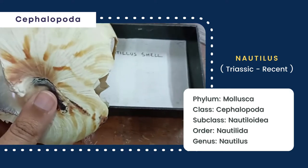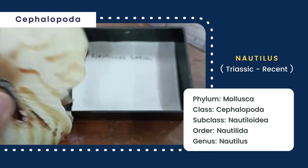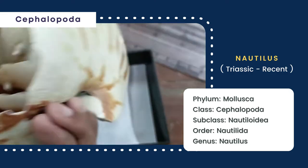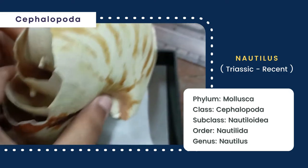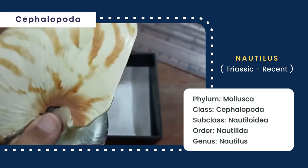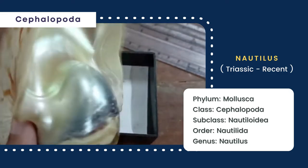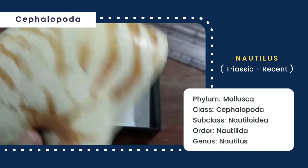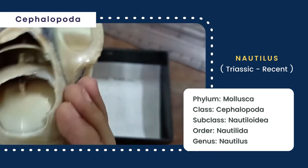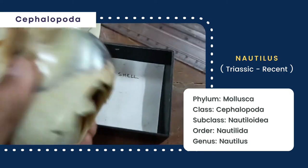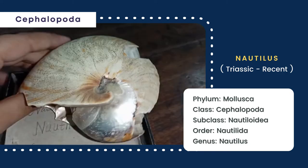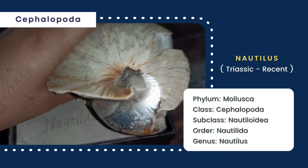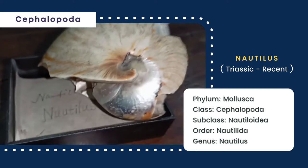There is a distinct siphuncle in the central position. The septa are generally curved and concave towards the aperture. The suture lines are simple and undulate with distinct saddles and lobes. The surface of the shell is smooth and shiny.